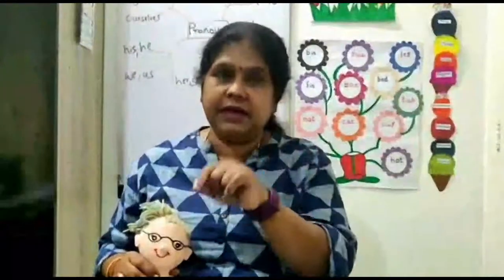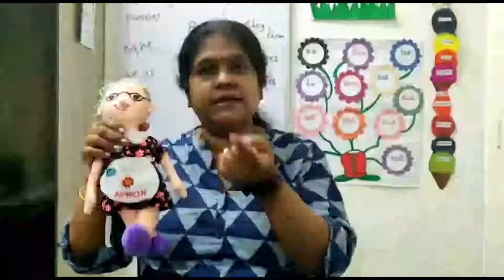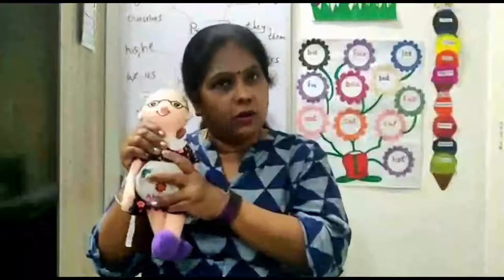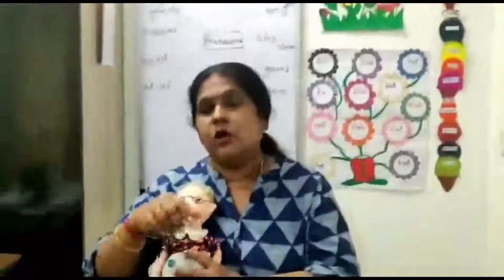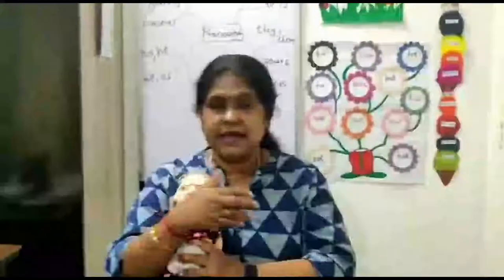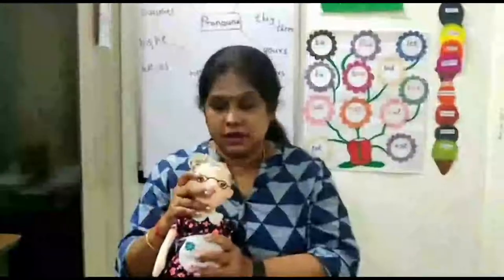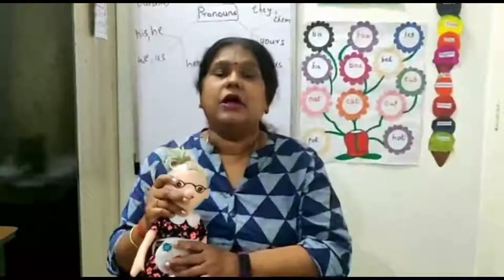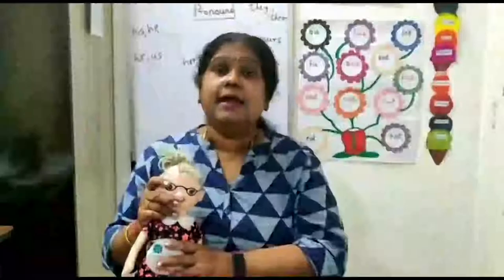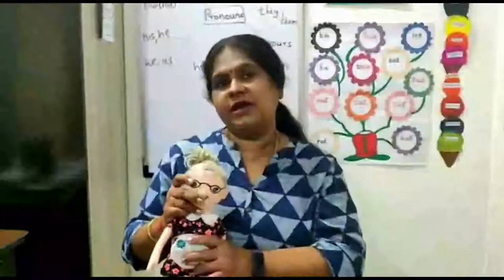Understood? So, instead of Jalaja and Minnie, I am using 'we' because we are there too. More than one person, we will use 'we'. Now, you can also say 'they are sitting on a chair'. If your friend asks you, are Jalaja and Minnie sitting on a chair? You will say, they are sitting on a chair.